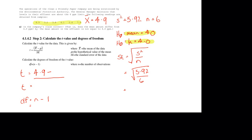I need to start by calculating summary statistics, and I've done that with my calculator. I have the mean is equal to 4.9, the variance is equal to 5.92, and the number of observations is equal to 6.